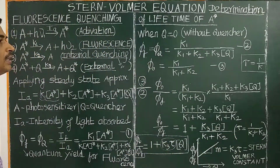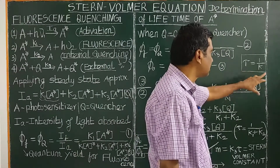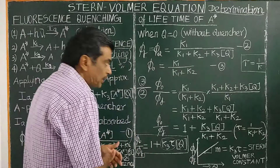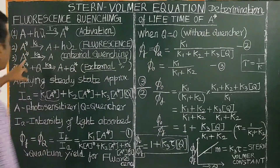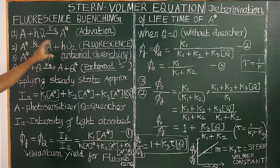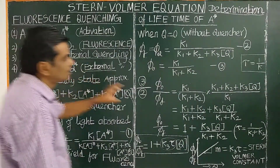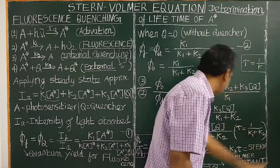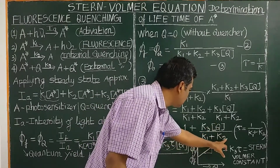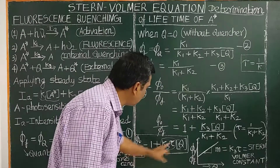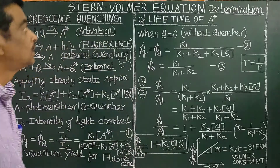The lifetime of the excited species τ can be obtained by taking the inverse of the rate constant. In the absence of quencher there are two rate constants, so τ equals 1/(K1+K2). Substituting τ for 1/(K1+K2), we get φ_0/φ_Q = 1 + K3·τ·[Q]. This equation is called the Stern-Walmer equation.